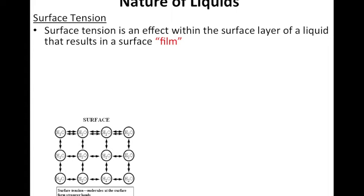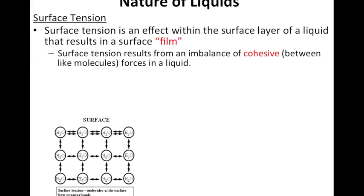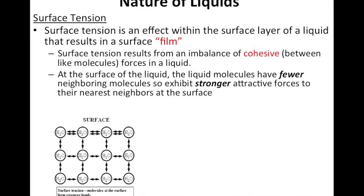So surface tension results from an imbalance of cohesive forces in a liquid. Cohesive forces happen between like molecules. So for cohesive forces to exist, the molecules must be of the same. But cohesive forces are attractions that hold the two molecules together. So think intermolecular forces is really what we're dealing with, but to be cohesive, they have to be between the same molecule.